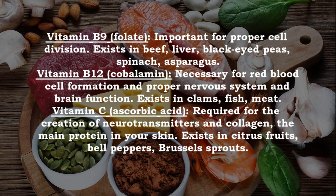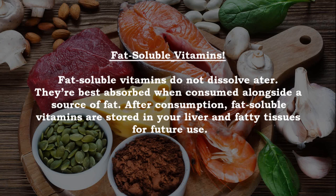Vitamin B9 (folate) — important for proper cell division; found in beef liver, black-eyed peas, spinach, and asparagus. Vitamin B12 (cobalamin) — necessary for red blood cell formation and proper nervous system and brain function; found in clams, fish, and meat. Vitamin C (ascorbic acid) — required for the creation of neurotransmitters and collagen, the main protein in your skin; found in citrus fruits, bell peppers, and Brussels sprouts.